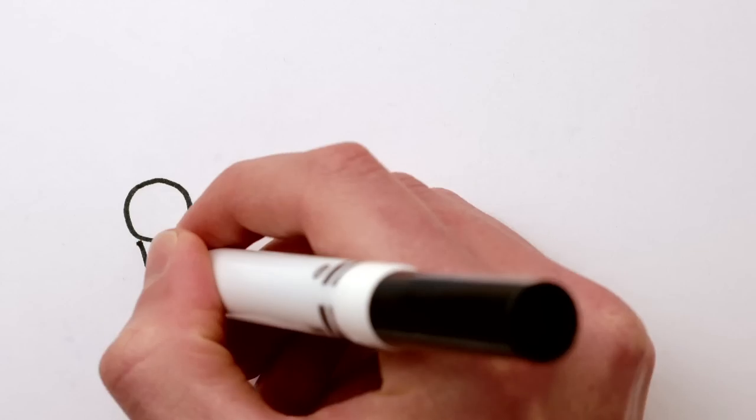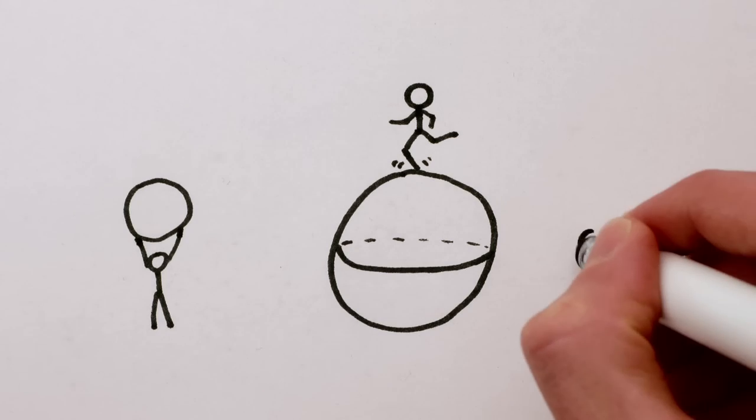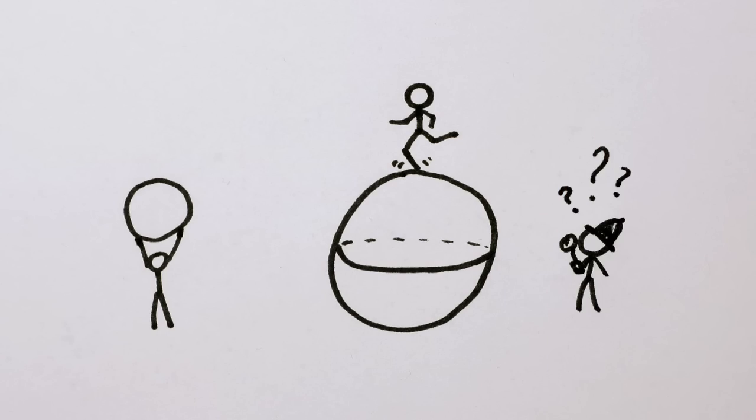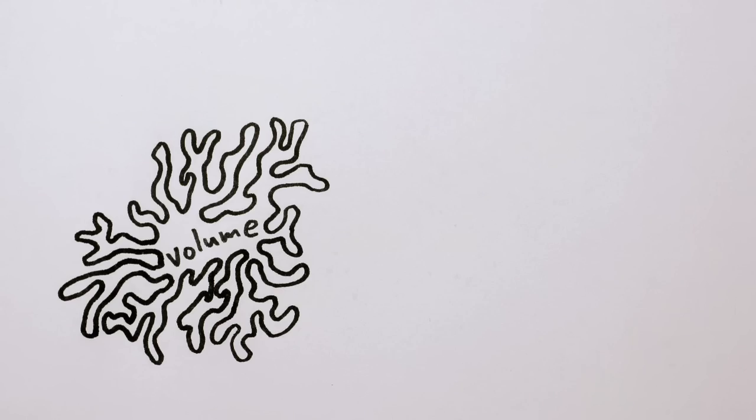It makes intuitive sense to call objects like circles and spheres round, but what is it about a sphere that makes it round? If you're talking about how effective a shape is at enclosing a large volume, you mean sphericity.